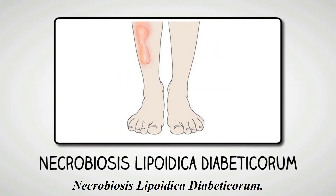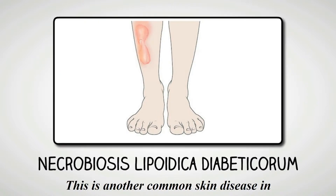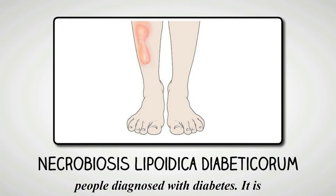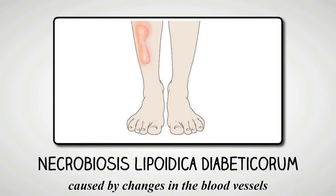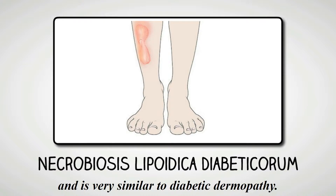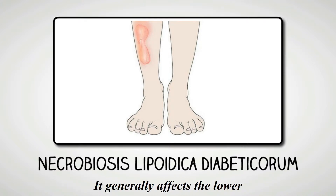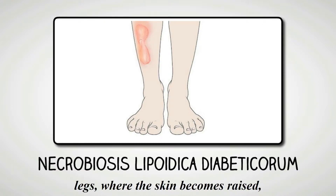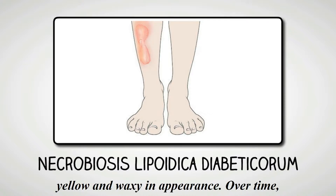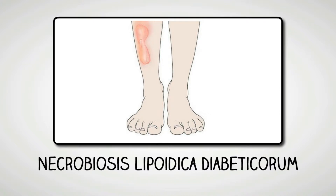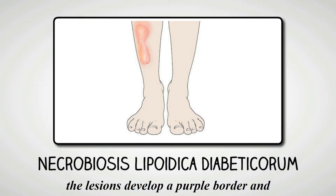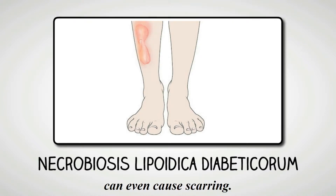Necrobiosis Lipoidica Diabeticorum. This is another common skin disease in people diagnosed with diabetes. It is caused by changes in the blood vessels and is very similar to diabetic dermapathy. It generally affects the lower legs, where the skin becomes raised, yellow and waxy in appearance. Over time, the lesions develop a purple border and can even cause scarring.